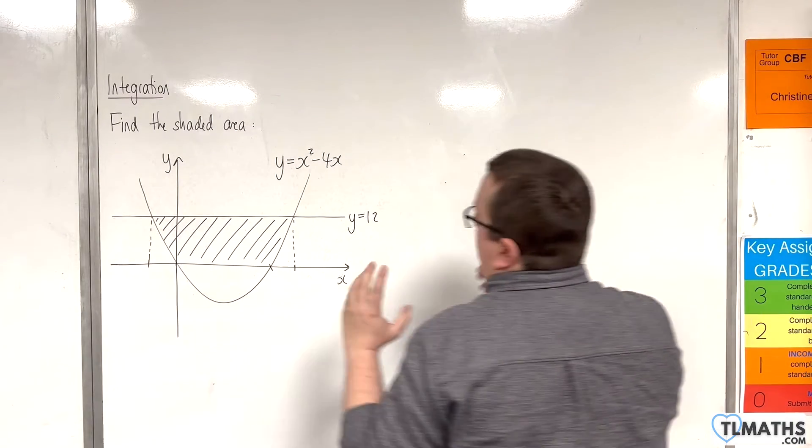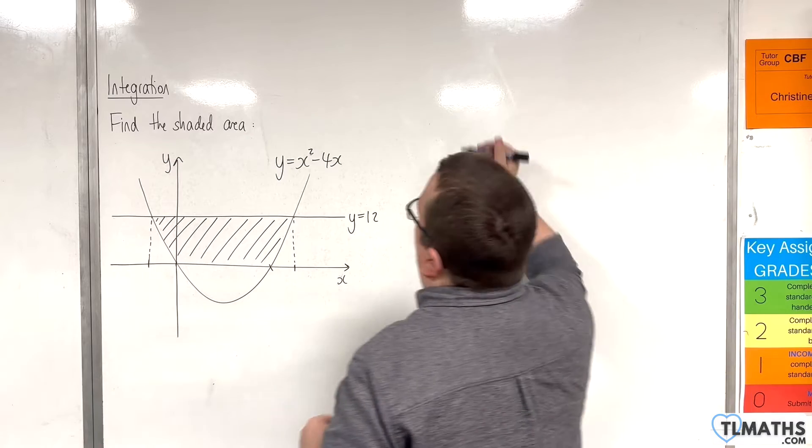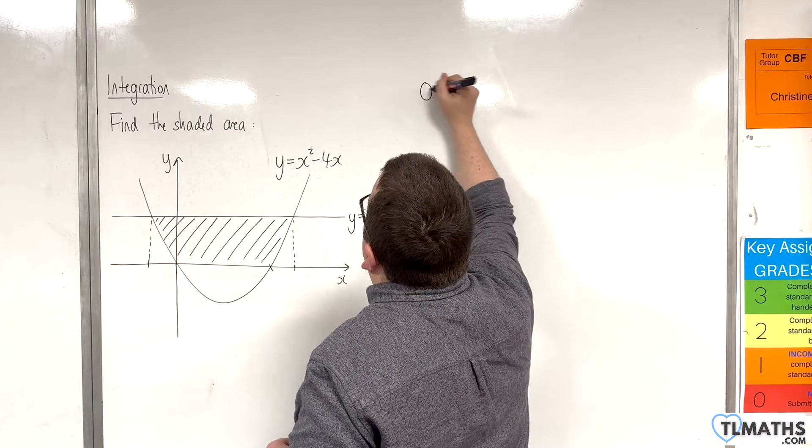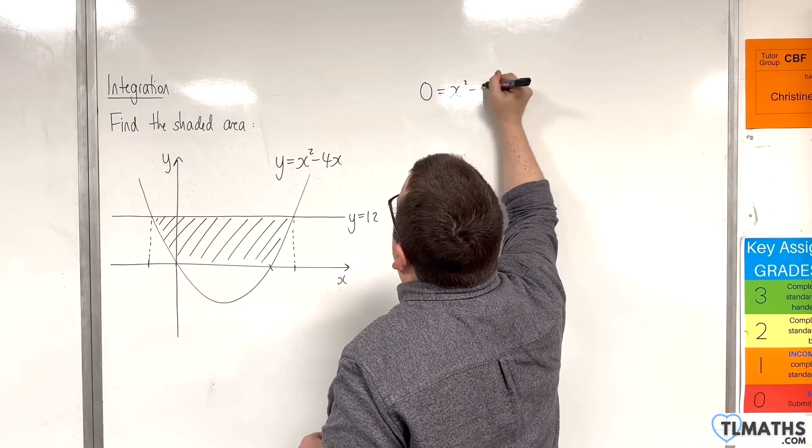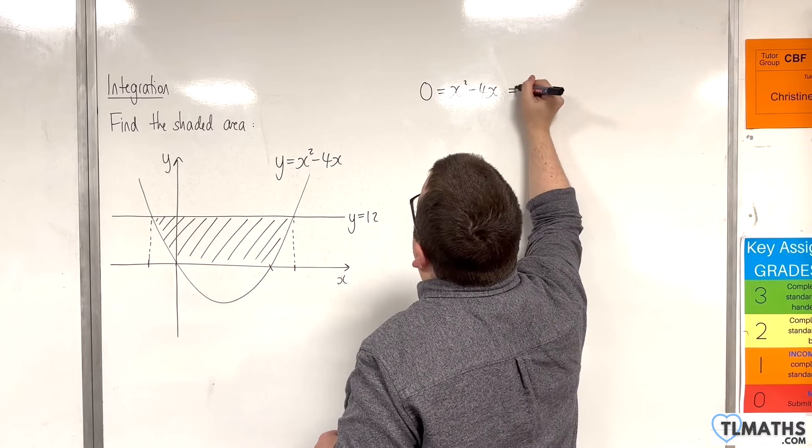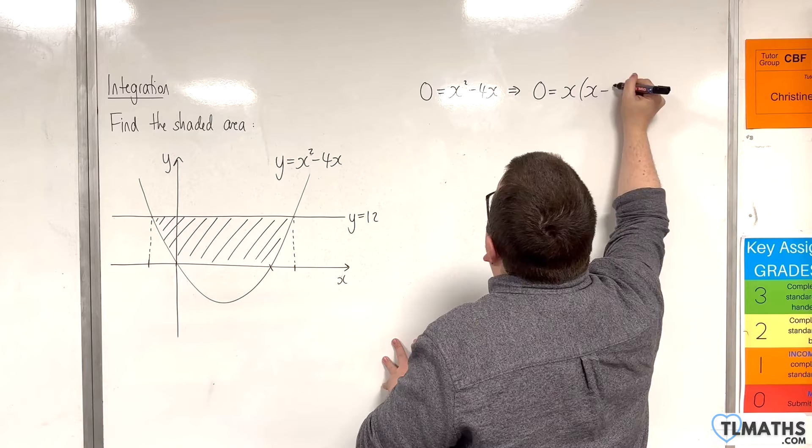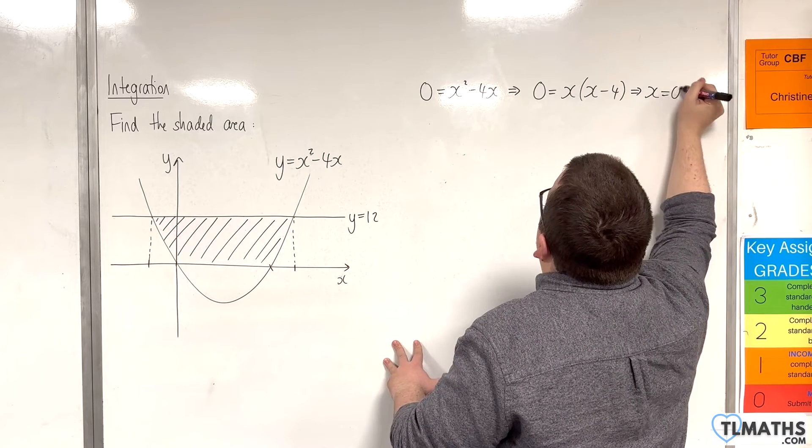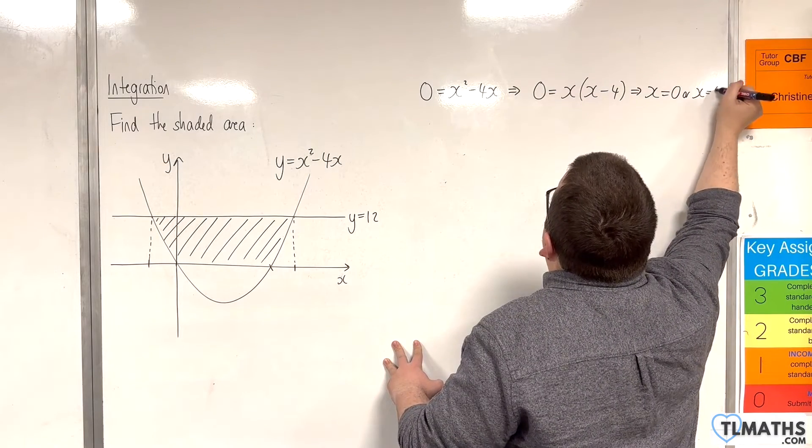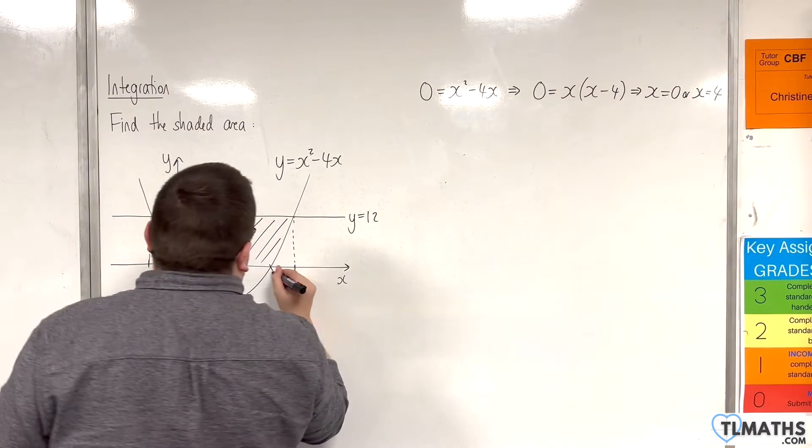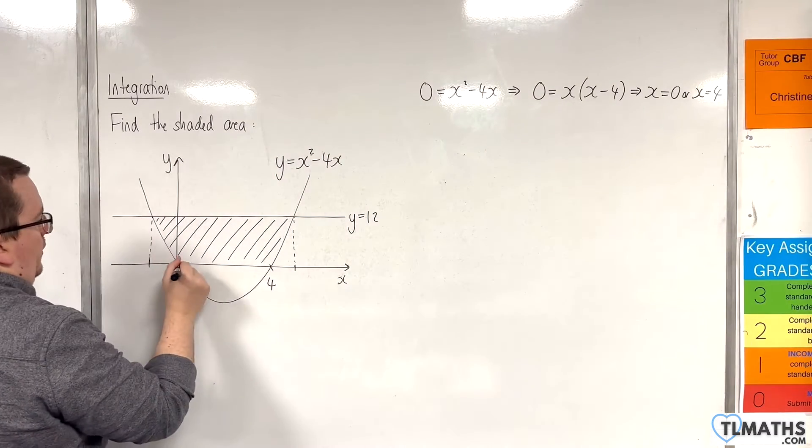That is when the curve is crossing the x-axis, so that is when y is 0. So 0 is equal to x squared take away 4x. Factorise that, bring the x out of a single bracket. And so x is 0 or x is 4. So this point is 4 and that's 0.